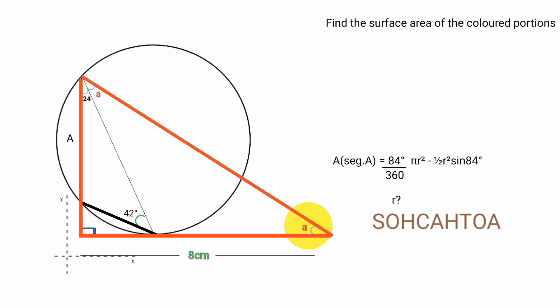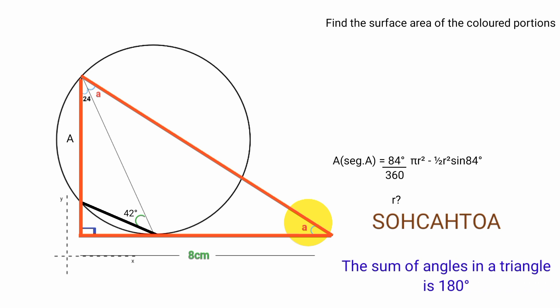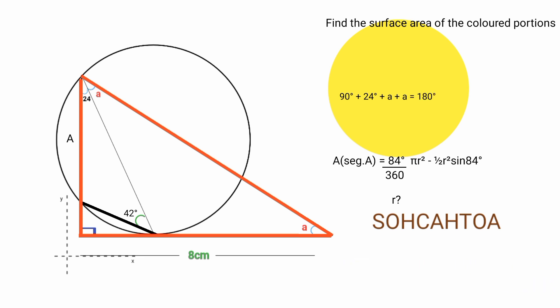We need angle A. Based on the rule that the sum of angles in a triangle is 180 degrees: 90 plus 24 plus a plus a equals 180. 90 plus 24 is 114, and a plus a is 2a, so 114 plus 2a equals 180. Subtracting 114 from both sides and dividing by 2: a equals 66 over 2, which is 33 degrees.